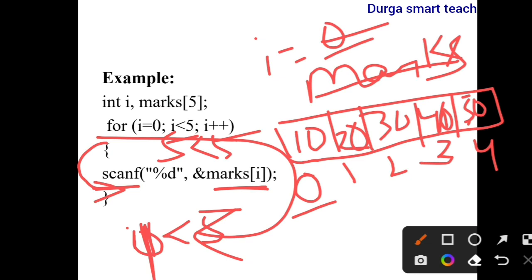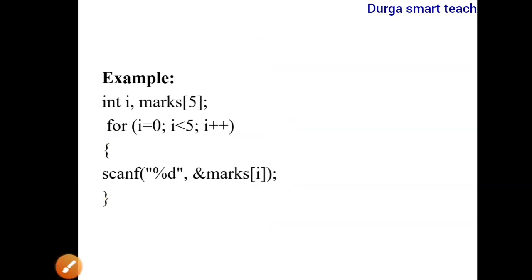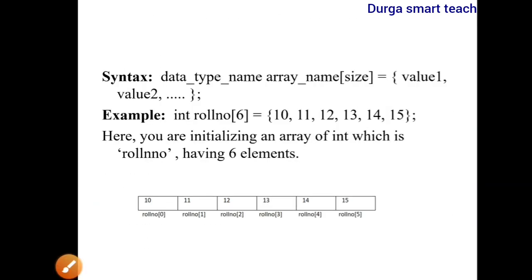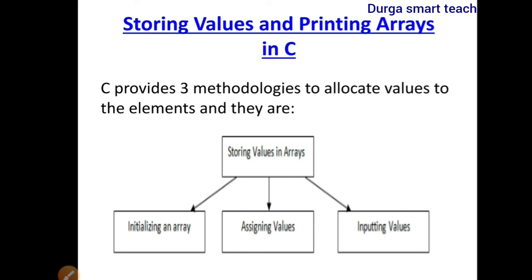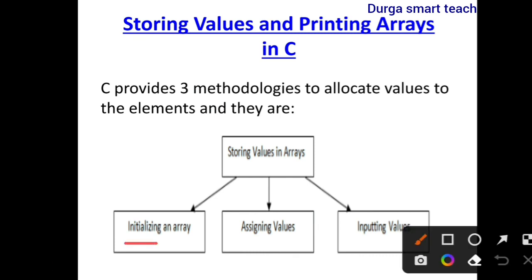In this way you can store values into the array. For storing values into the array we use three methods: the first is initializing an array, the second is assigning values, and the third is inputting values. For initialization we directly enter a list of numbers. For assignment we use the equals to symbol. For inputting we use scanf.